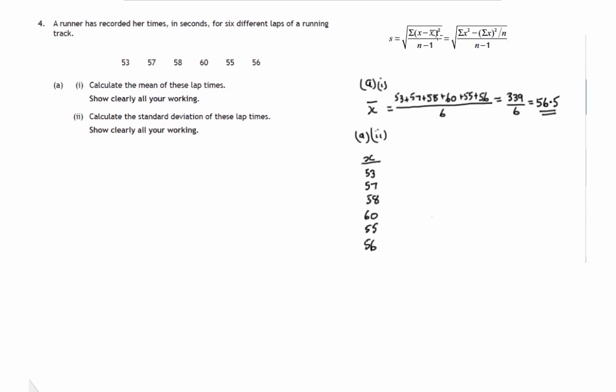Second column, the deviations from the mean. So we take each data point and find the difference between the data point and the mean. Some of them will be negative. So this first case, remember the mean is 56.5, so 53 minus 56.5 is negative 3.5. Second one is 57 minus 56.5, that's 0.5. 58 minus 56.5 is 1.5. 60 minus 56.5 is 3.5. 55 minus 56.5 is minus 1.5. And 56 minus 56.5 is negative 0.5.